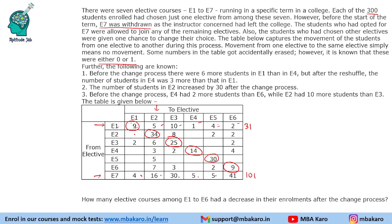We can also add the second column: 39, 45, 50, 60, 76. These are the numbers we can compute because we have complete data. Now, we are given that before the change there were 6 more students in E1 than in E4.